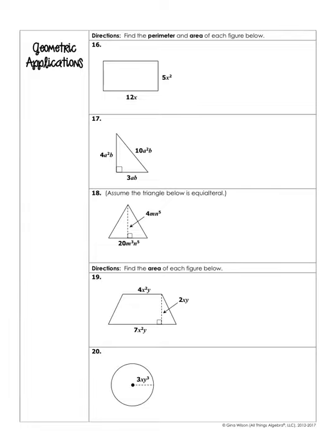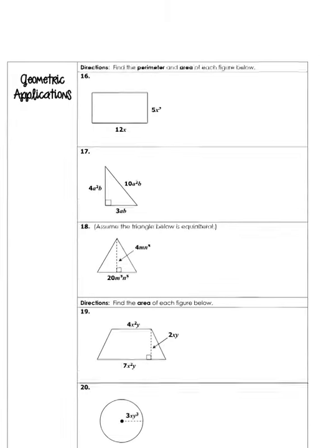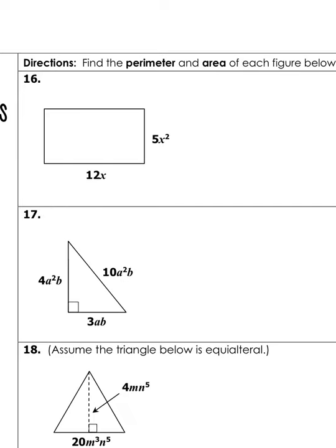These are geometric applications — find the perimeter and area of each figure. Remember: perimeter is when you add up all the sides; it's the total length around your object. Area is the amount inside — for a rectangle or square, we do length times width.